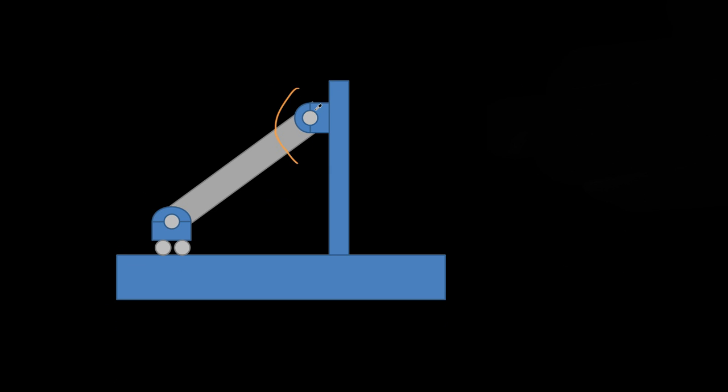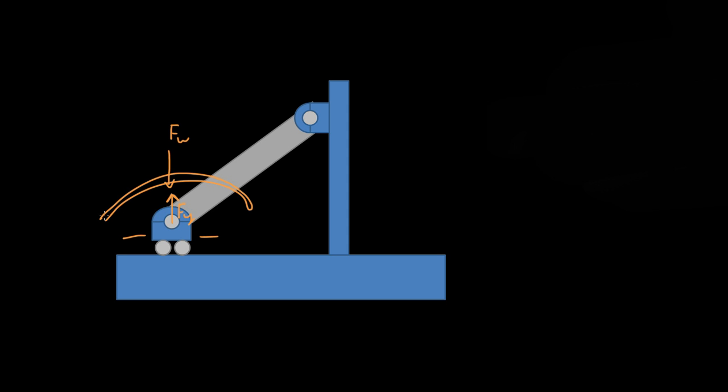Now this one is kind of the same thing — it can rotate, so it allows rotation. The only difference is this can go that way and that way. So this is only providing a force straight up, preventing it from going straight down. So it's providing some force Fy while gravity Fg is pulling it straight down. But again, it can roll that way, roll that way, or rotate either way.